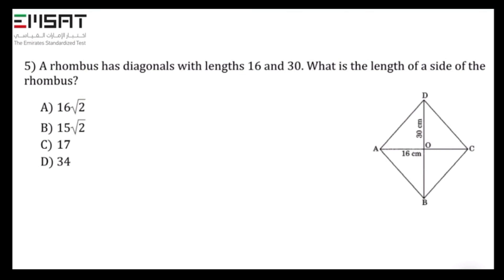Question 5. A rhombus has diagonals with lengths 16 and 30. What is the length of a side of the rhombus? As we know, the diagonals in the rhombus bisect each other at 90 degrees.